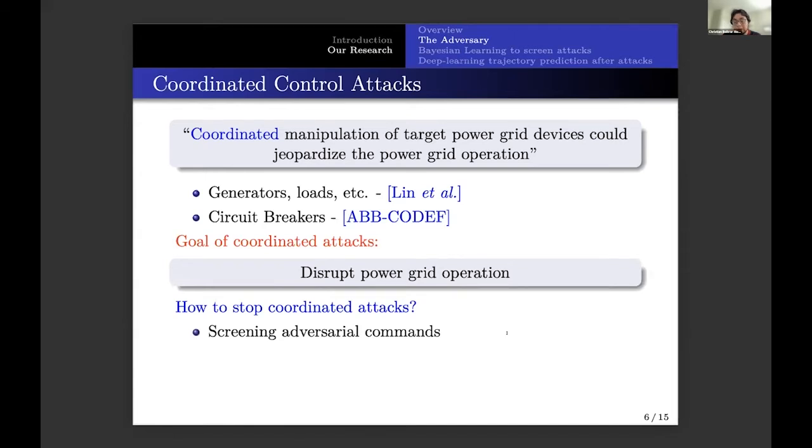So we have developed several methods on how to stop these coordinated attacks. For example, we are now going to show how we screen this adversarial command that will operate the generators and will move the power grid to a point that's going to disrupt. And also, and this is our current work, we're trying to see after an attack, whether we can predict what would be the consequence of the attack very fast, so we can create emergency control strategies.